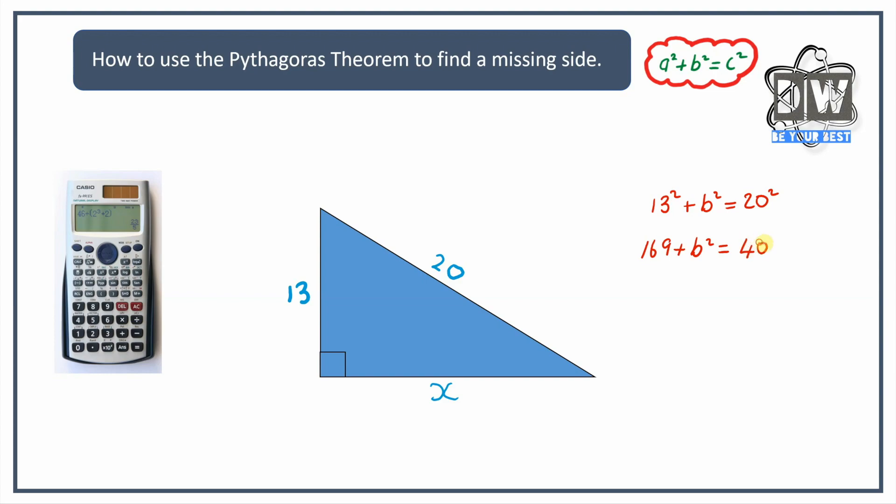20 times 20 is 400. So now we've got 169 plus b squared equals 400. If we can remember how to change the subject, what we would do is minus 169 off both sides. What's 400 take away 169? We've got b squared equals 231. What is the square root? We square root and square root. The square root of 231 is going to be 15.2 to one decimal place.